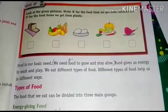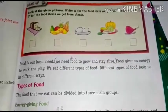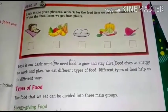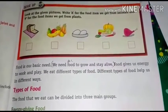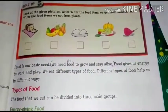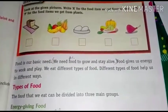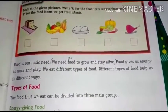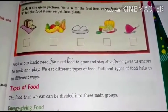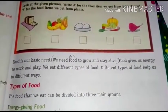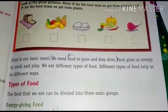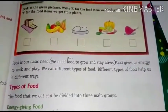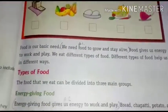We need energy for playing. Different types of food help us in different ways. We eat fruits, vegetables, bread. We get different things from different types of food — we get protein and vitamins — we get everything in one place. So we will learn about that.